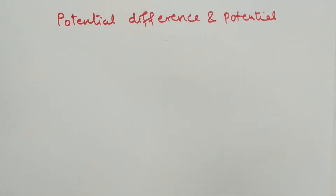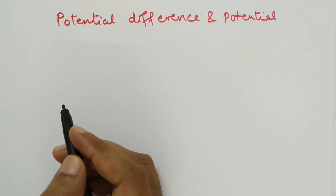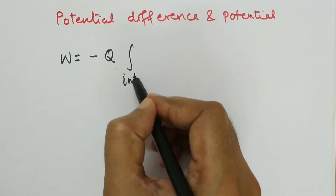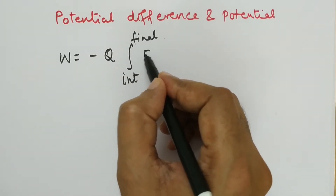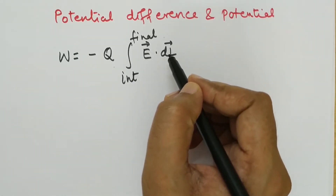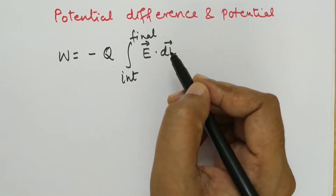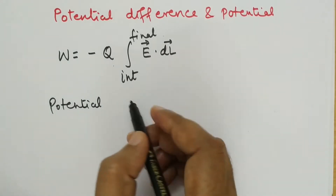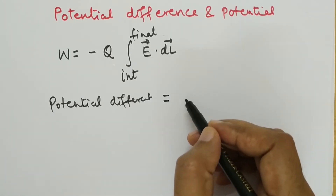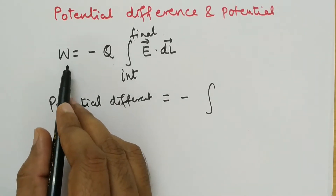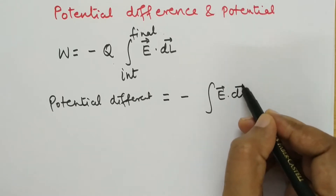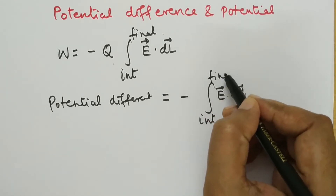Now we are going to study potential difference and potential. From our previous lecture, work done is minus the integral from the initial point to the final point of E dot dL, where dL is the direction of movement. The potential difference is defined as work done on unit charge to carry from one point to another point, so it equals minus the integral of E dot dL from initial to final point.